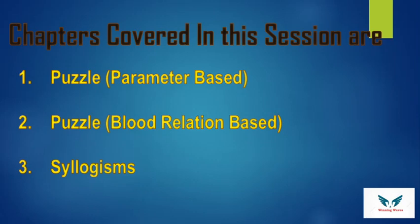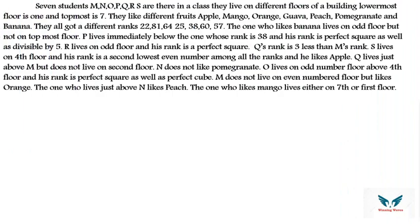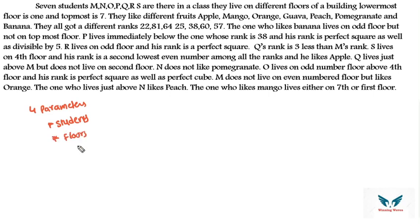Question number one is based on puzzle parameter. Seven students M, N, O, P, Q, R, S are in a class. They live on different floors of a building — lowermost is one and topmost is seven. They like different fruits: apple, mango, banana, orange, peach, pomegranate, and guava. They all got different marks: 22, 81, 64, 25, 38, 60, and 57. So we have four parameters: students, floors, fruits, and marks.